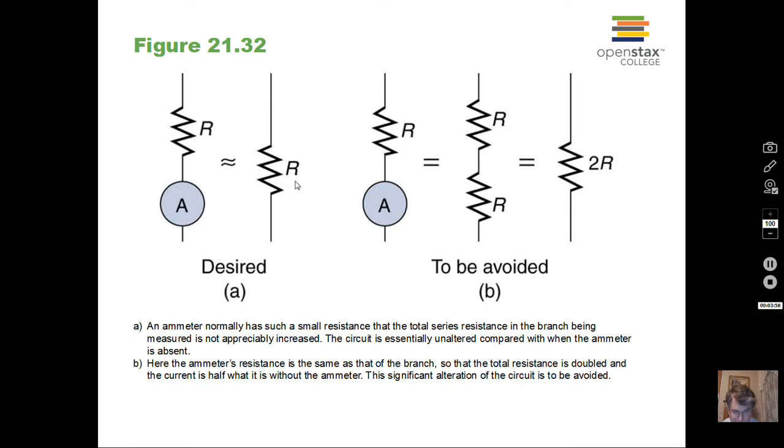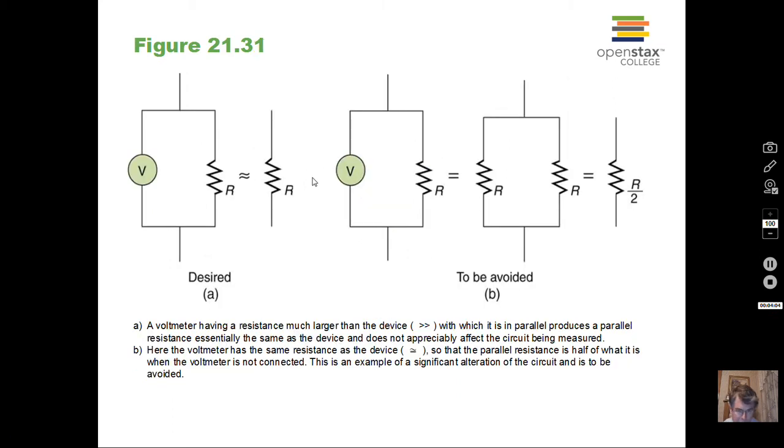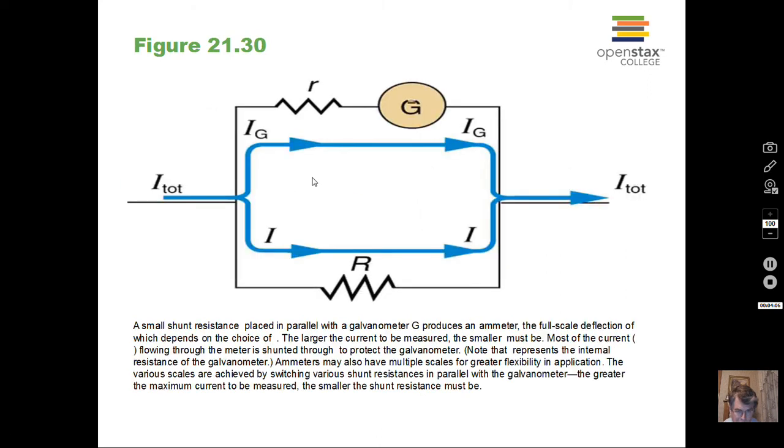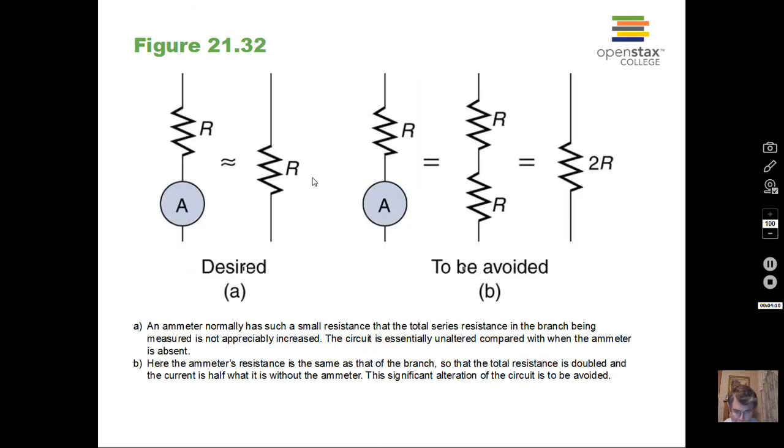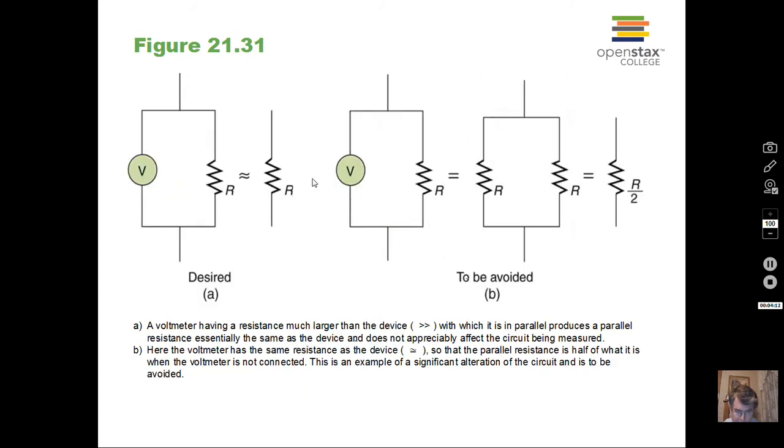And a caution with the voltmeter as well. With the voltmeter, you do not want to put the voltmeter in series with the circuit. With the resistance, we have very high resistance for the voltmeter. So if we put it in series with the resistor, that's significantly going to change the operation of the circuit.